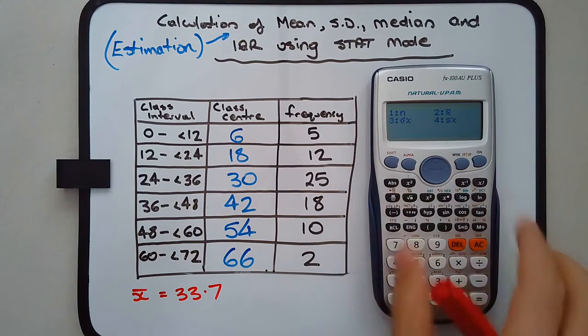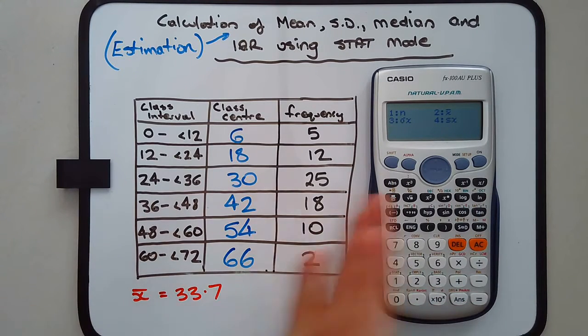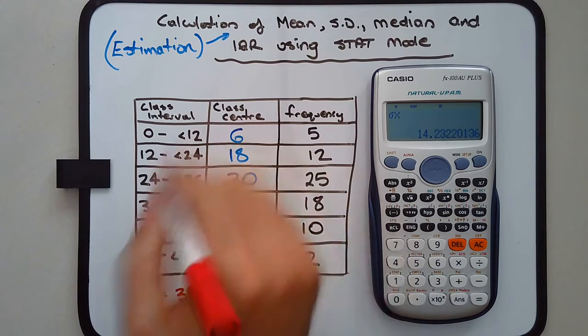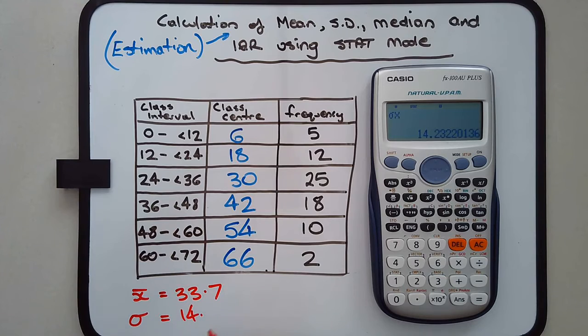We're just going to use option 3. There was no mention that this was a sample, so we treat it as a population. Press 3, and there's our standard deviation, or at least our estimate of the standard deviation. That's 14.2.